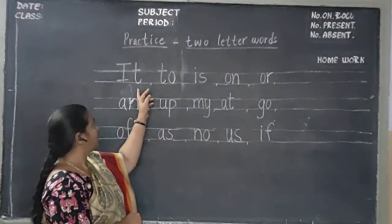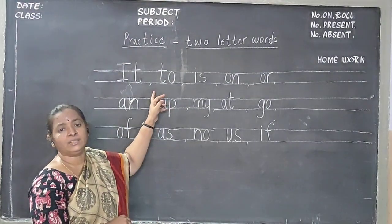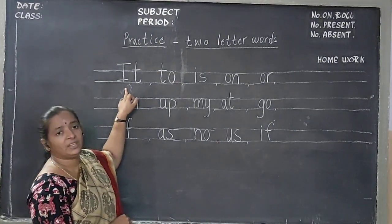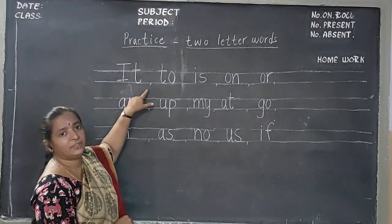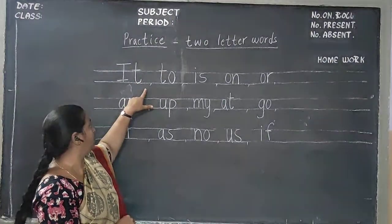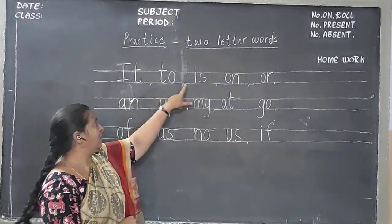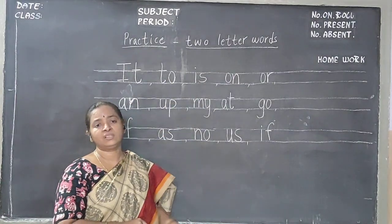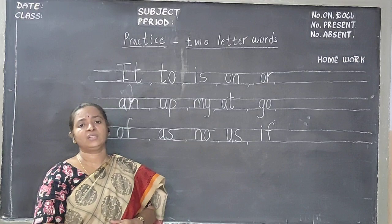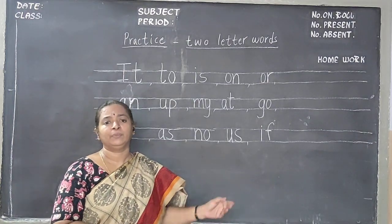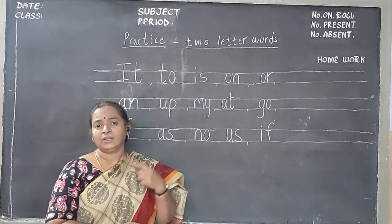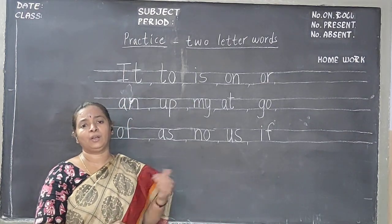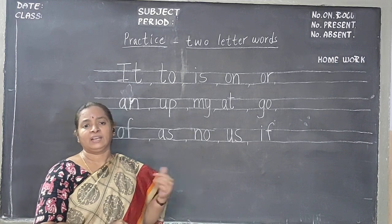Write these two letter words. Start from here. Put finger gap. In that finger gap you should put a comma. Put finger gap and write two letter words. Pronounce them. Look at them. Pronounce them and write them. Recollect them. You should be able to pronounce them correctly.